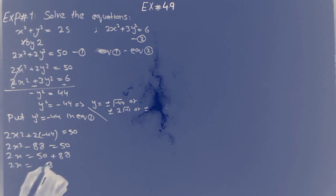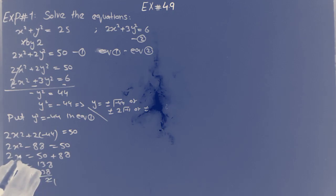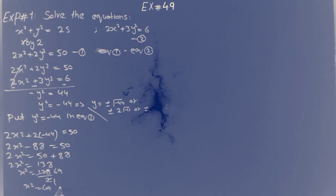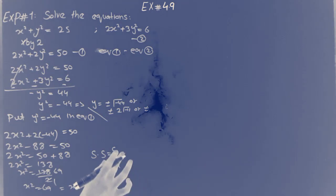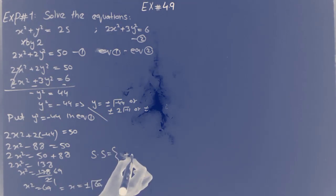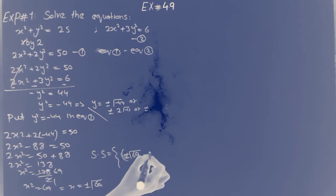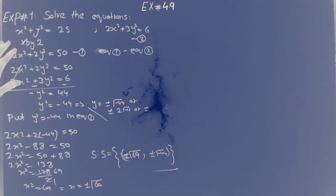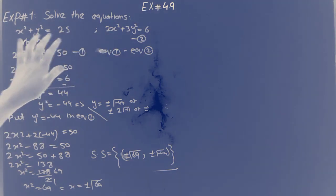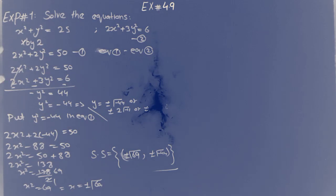Solving for x, we get x equal to plus or minus √69, and y equal to plus or minus √(−44). So we have solved example 1. What we did: we made the x-square coefficients the same and multiplied by 2. If we had matched y-square instead, we would multiply by 3.